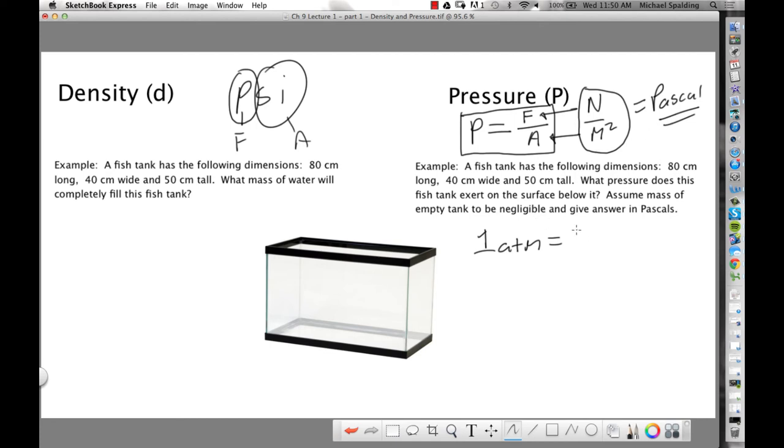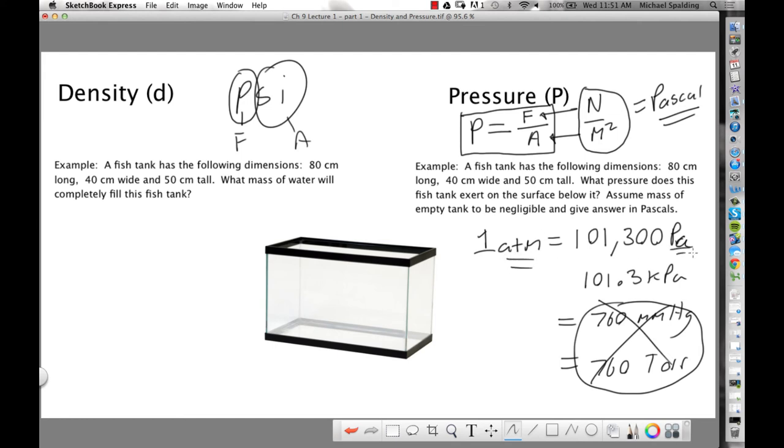All right. One atmosphere. How many pascals is that? This is a very important conversion. 101,300 pascals. Which, in chemistry, in chemistry, you called this 101.3 kilopascals. Okay. And then there's also, anybody? I heard other units. 760 millimeters of mercury. 760 torr. But these guys, you're not going to really, these ones we're not going to really use. Mainly, you've got to know how to go from atmospheres to pascals.